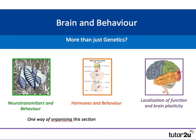Brain and behaviour: more than just genetics. This webinar will be split into three sections — neurotransmitters and behaviour, hormones and behaviour, and finally, localisation of function and brain plasticity.